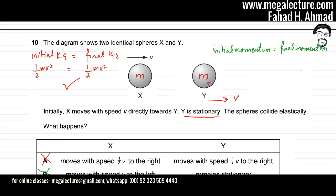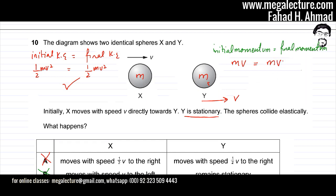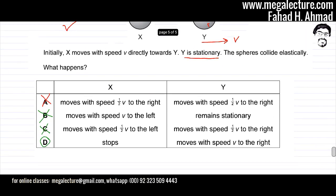Momentum is also conserved in option D. The initial momentum is M times V. After the collision, Y travels to the right with momentum M times V, and X is stationary with zero momentum. The total final momentum equals the initial momentum. Option D fulfills all conditions for an elastic collision and is the correct answer.